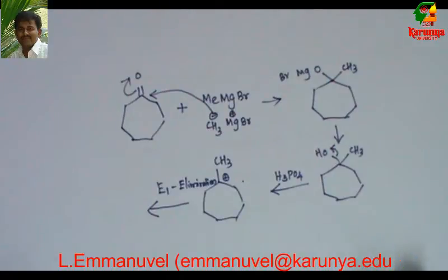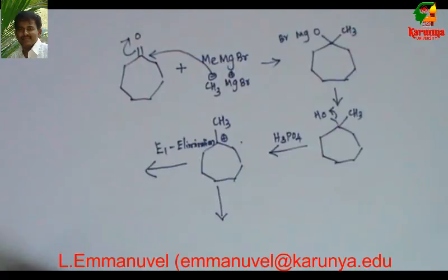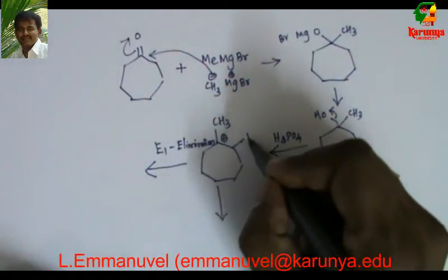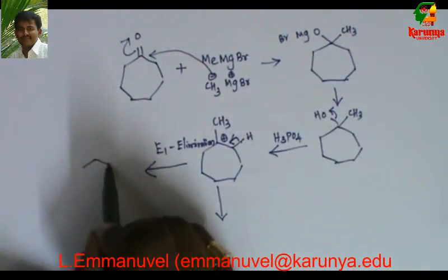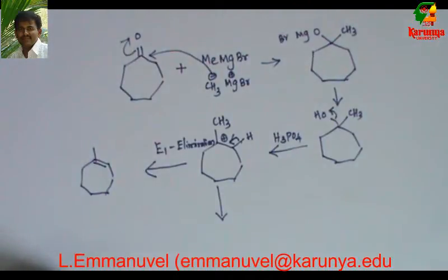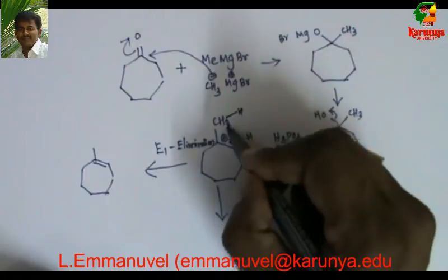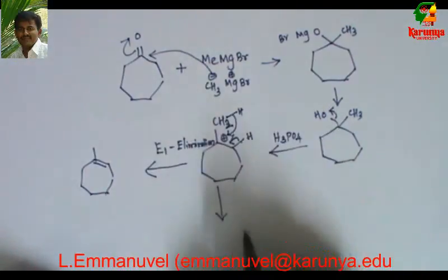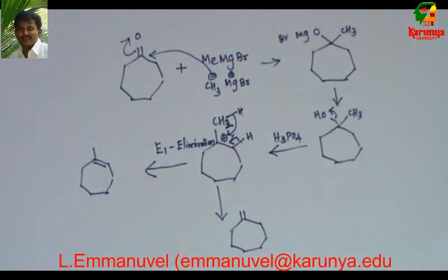There are two possibilities. The first one: this hydrogen may get eliminated to give a tri-substituted olefin. The second option: the hydrogen here may fall to give an exocyclic olefin. The question is which one will be major and which one will be minor.